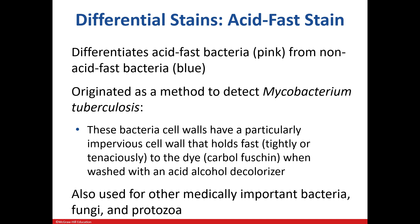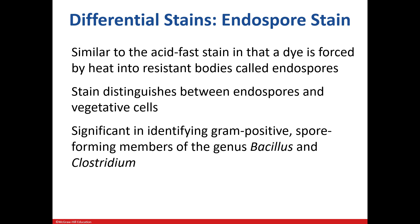An acid-fast stain shows differences in acid-fast bacteria, which stain pink, from non-acid-fast bacteria, which stain blue. This is the most useful tool to identify Mycobacterium tuberculosis. This bacterium has a waxy cell wall that most dyes can't penetrate. Carbol fuchsin, methylene blue, and acid alcohol are used in this stain along with heat. An endospore stain uses heat to force dyes into the specimen. It shows differences between endospores and vegetative cells. This stain is vital in identifying organisms like Bacillus anthracis and Clostridium botulinum, the causative agent of botulism.